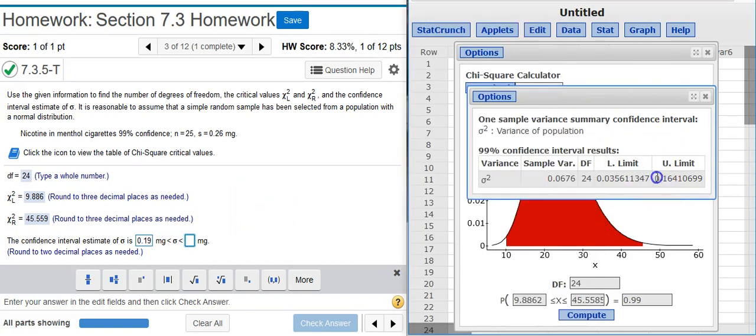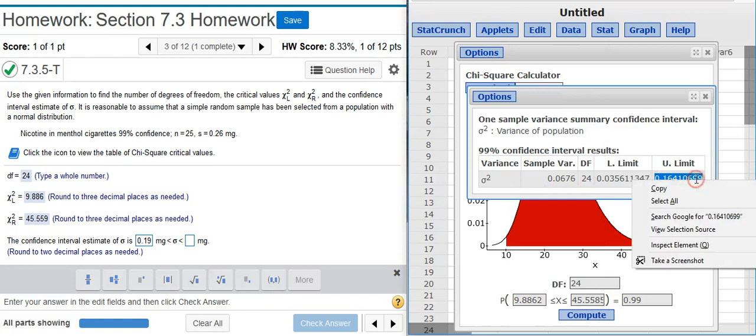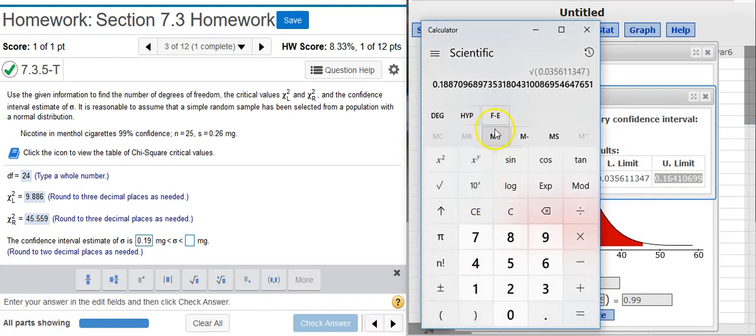And the upper limit, I'm going to do the same thing. Copy that out, come here, right click, paste that in, take the square root. There's my upper limit.